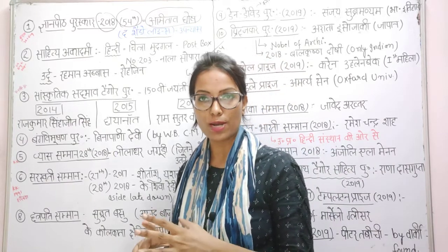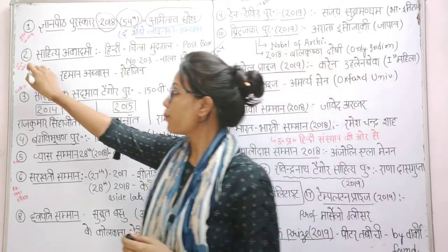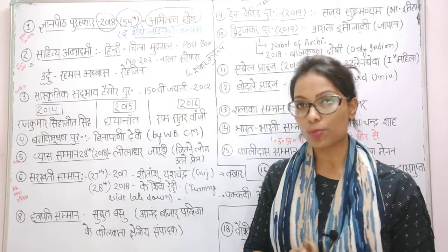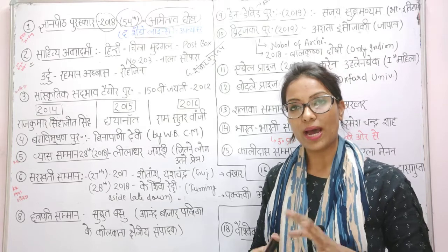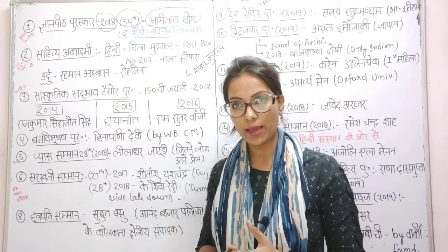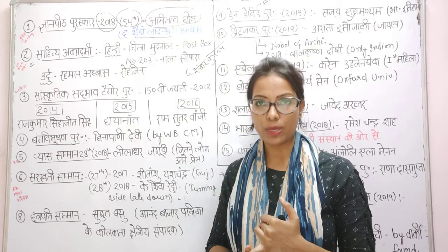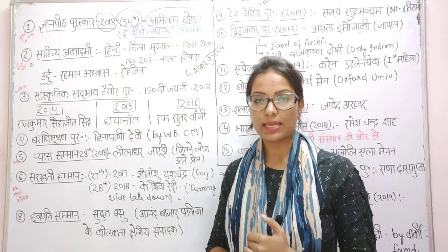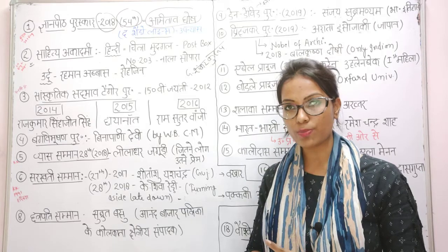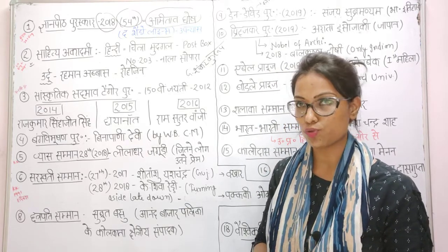Another important award is the Sahitya Akademi Puraskar. This is given in 24 languages. The 22 languages are those given in your constitution, and 2 additional languages include English and Nepali. So the Sahitya Akademi Puraskar is given across 24 languages including English.